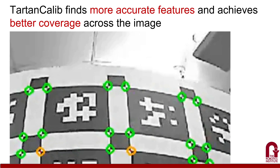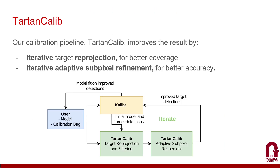Here the green circles denote the newly detected features. Our key contribution is to use an intermediate model to improve feature detection coverage and precision. We iteratively improve the camera model while improving feature detections. The intermediate model is used to first re-project the target into the image frame and then filter out tags that were not observed.